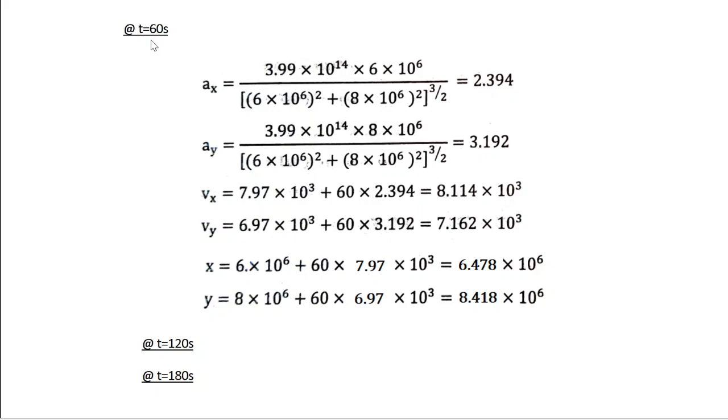Then you have to calculate all the parameters for the next two sub-intervals, time t = 120 seconds and t = 180 seconds. You can do these two as a homework. So if you look at the values here, you can see that from time t = 0 to time t = 60, or in one sub-interval of one minute duration, you can see that the values of the coordinates, velocity, acceleration, everything remain the same.